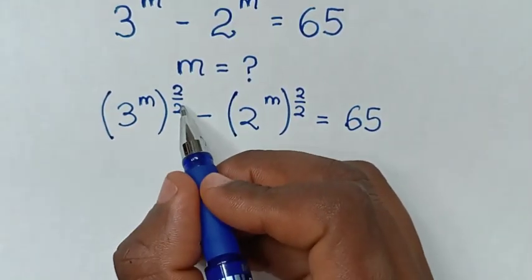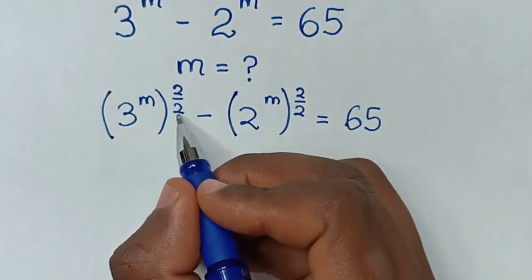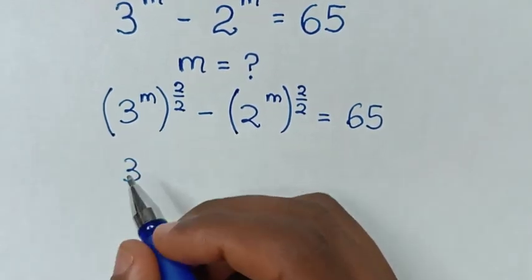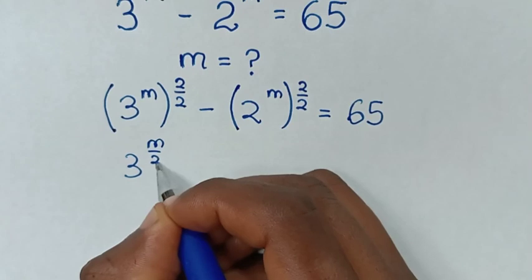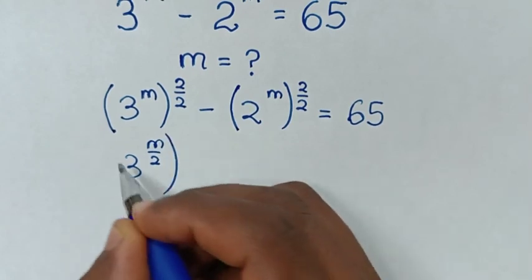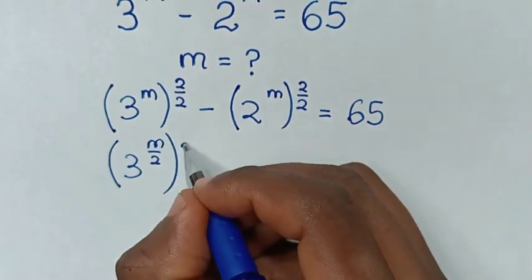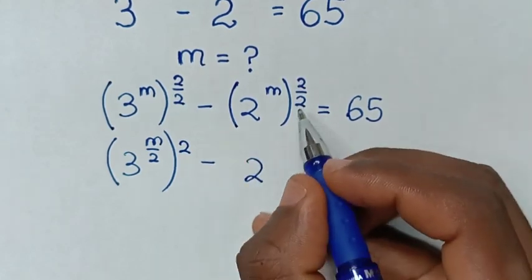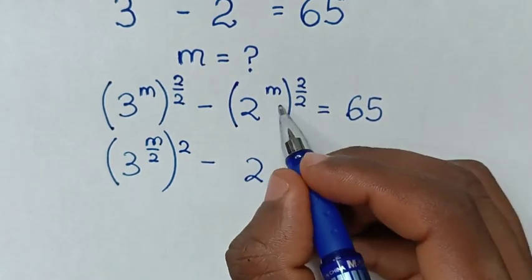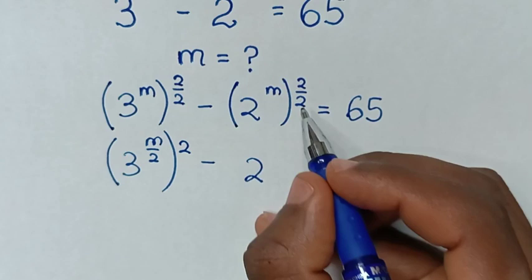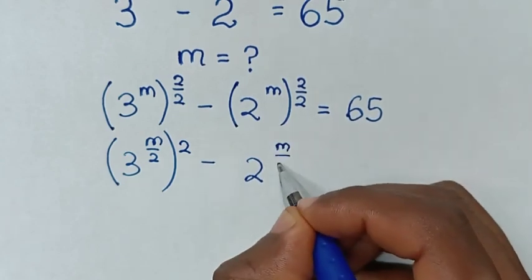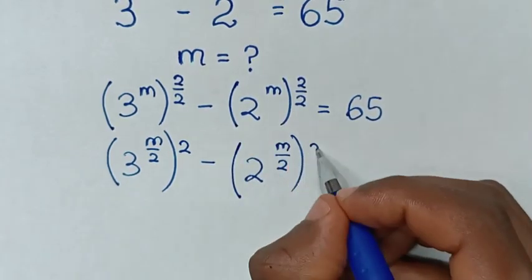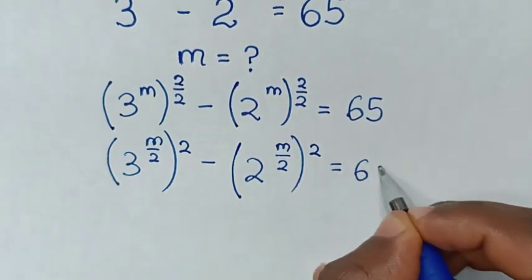Then in the next step, from the power we take the denominator of 2 inside the bracket. So it will be 3 power of m over 2, then bracket power of 2, minus 2 power of m over 2, then bracket power of 2, is equal to 65.